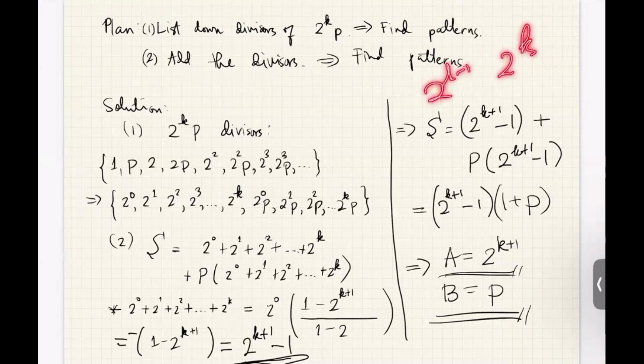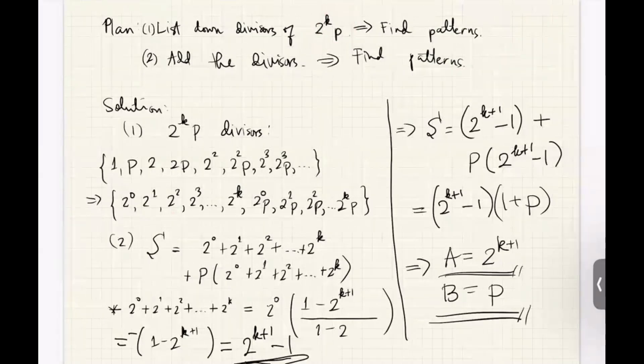You cannot have 2 to the K plus 1 because, well, if you try to divide this thing with 2 to the K plus 1, you can't. 2 to the K plus 1, you're going to get some remainder, or maybe 2 to the K plus 1 is greater than this number. So yeah, we only have up to 2 to the K.